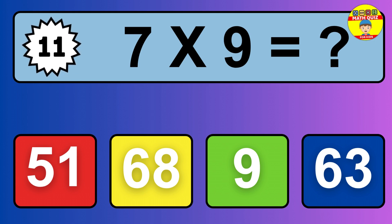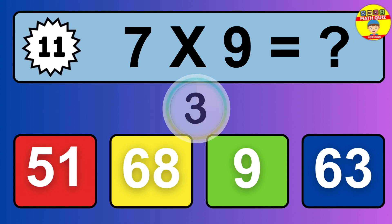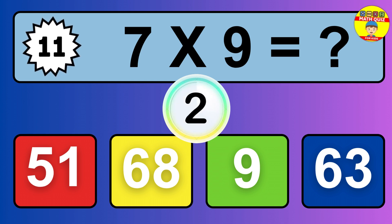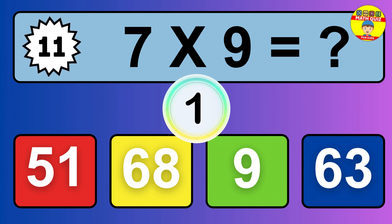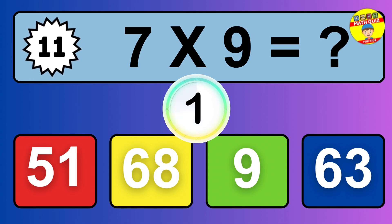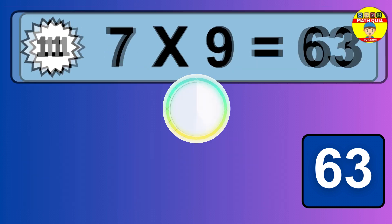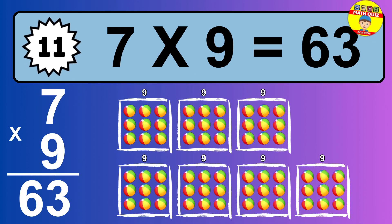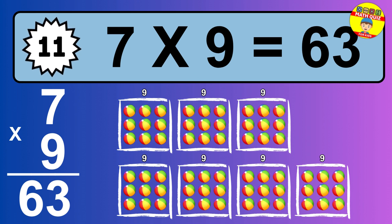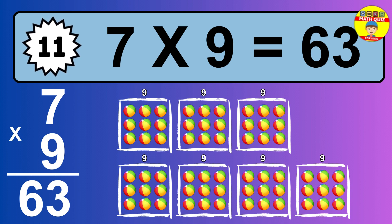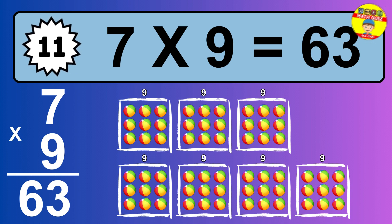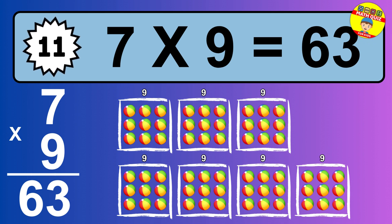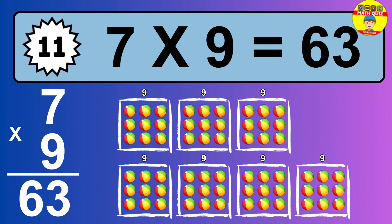Question 11. 7 times 9 equals what? The answer is 7 times 9 is 63. To calculate, we have 7 groups with 9 balls each one. So how many balls do we have? 63 balls.